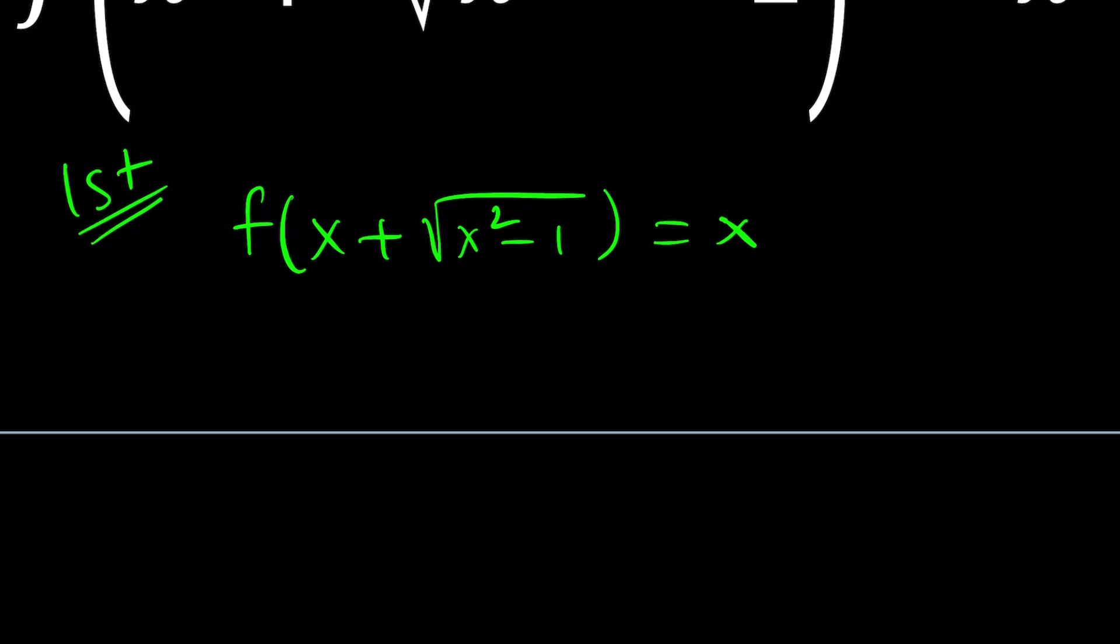So in order to be able to do that, I'm going to set this whole thing inside the parentheses equal to another variable. How about using something like t? So suppose x plus the square root of x squared minus 1 equals t. So my goal is to get something like f of t.